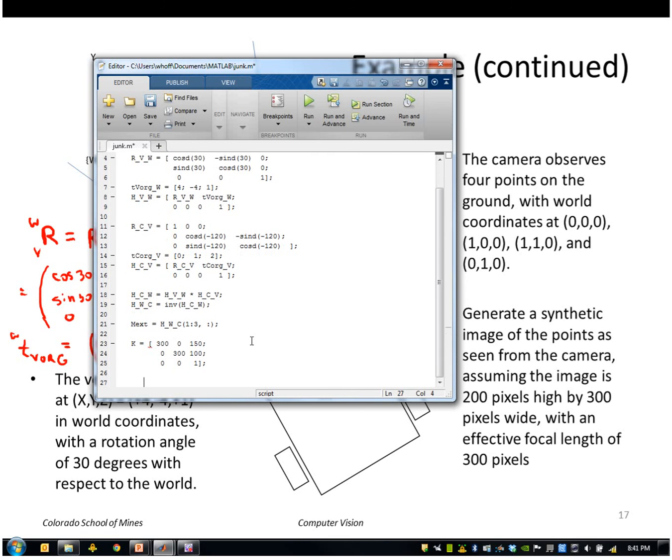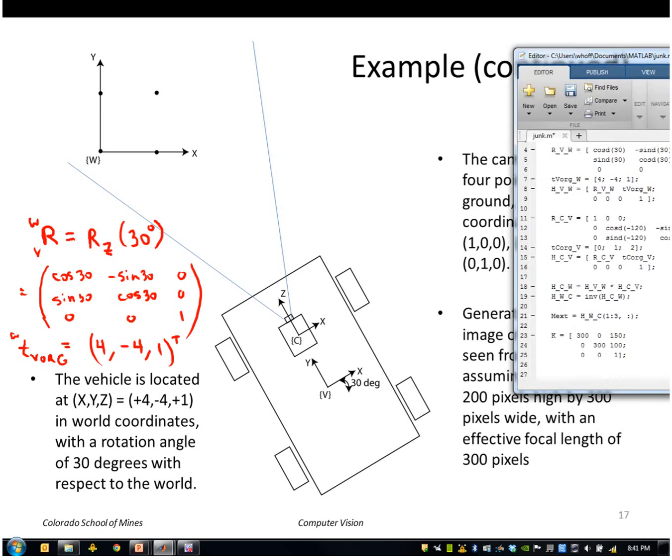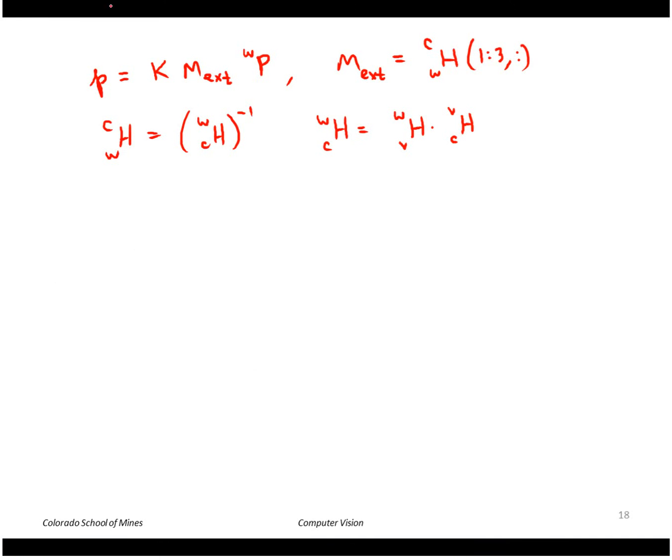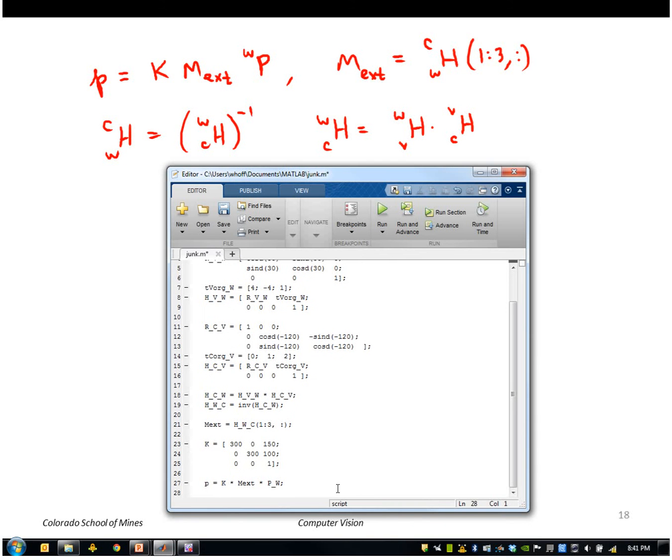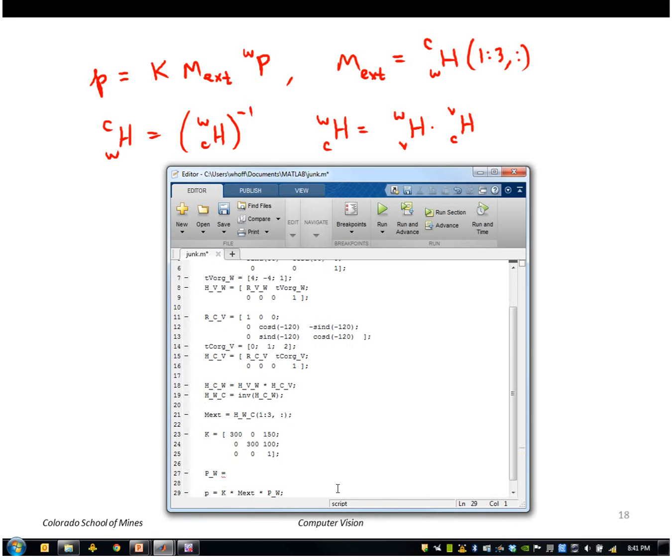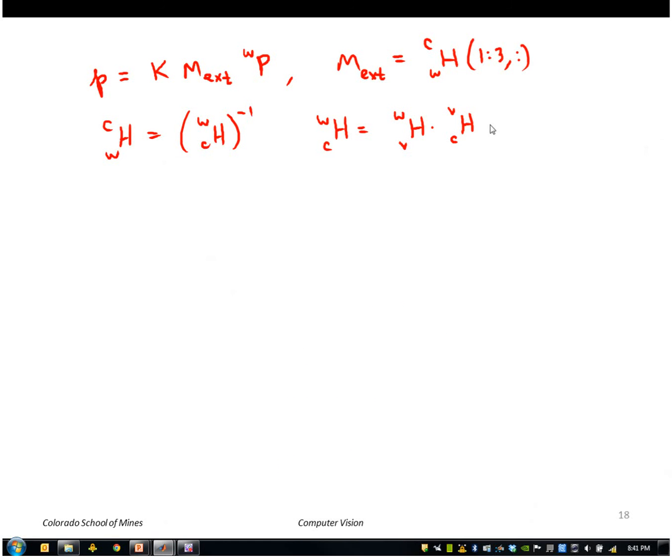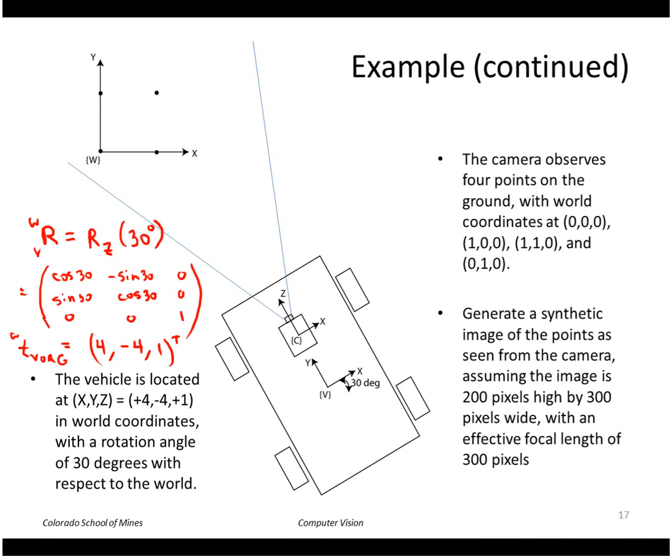So that's my K. I can project the points onto the camera by multiplying K times M_ext times P_world. So I need to define P_world. And actually I have four points in the world that I want to transform.